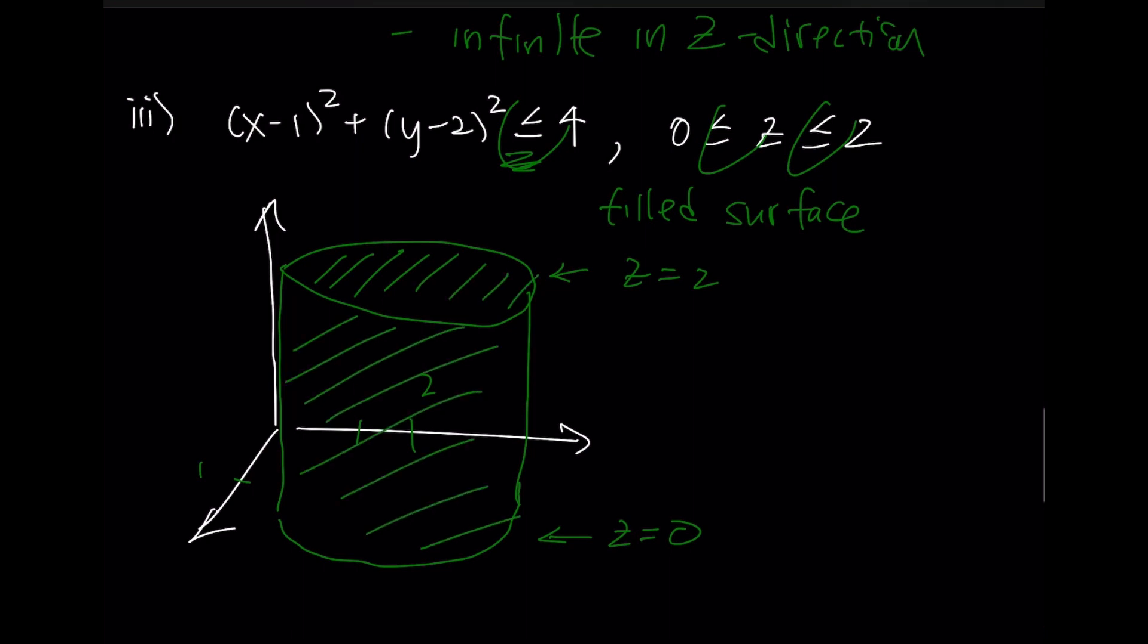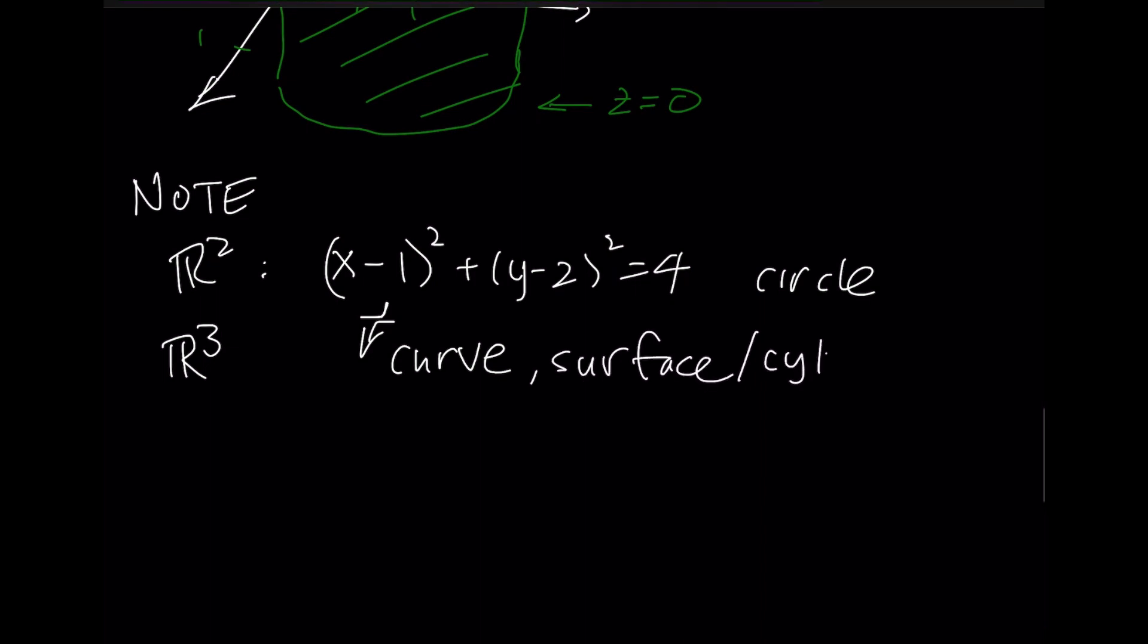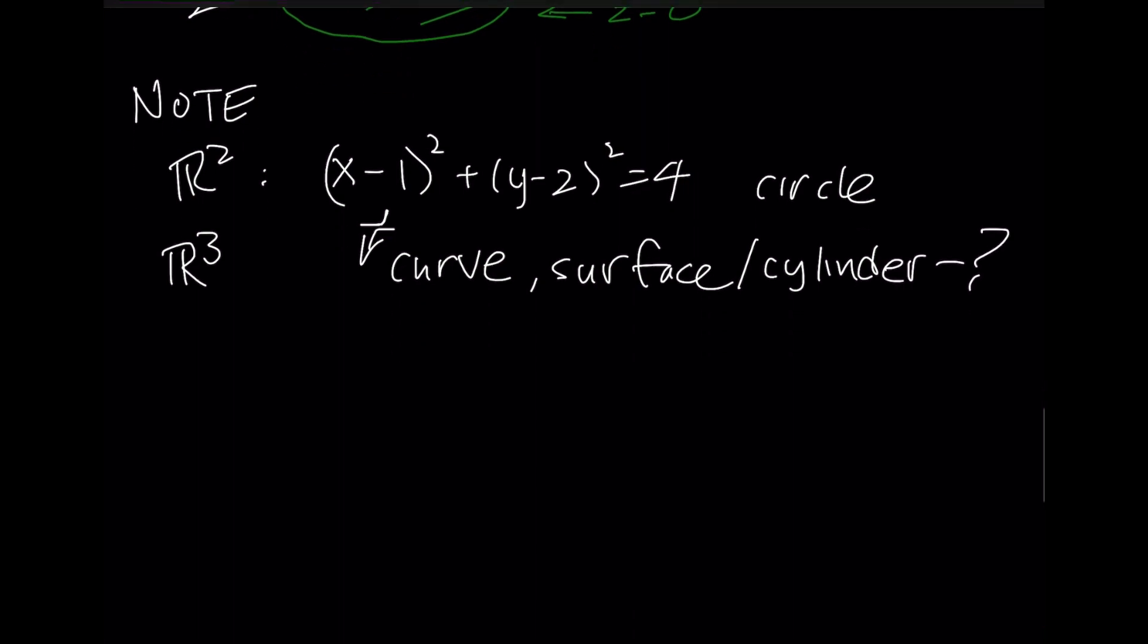There's a really important point here. In R2, let's say we talked about x minus 1 squared, y minus 2 squared was 4. This was a circle. But when I went to R3, depending on what other information I had, this could have been many things. It could have ended up being a curve. It could have ended up being a surface. That was a cylinder. Are there any others? You can actually extend it in other ways.